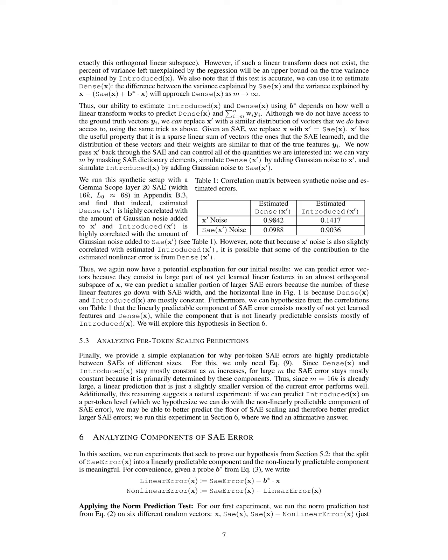Section Summary. In this section, we adopt a weak linear hypothesis to model activations in sparse autoencoders, assuming they learn only the most common linear features while introducing some error. We analyze how well we can predict the norms and vectors of SAE errors, concluding that these errors largely consist of unlearned features and that our ability to estimate them depends on the linear predictability of the introduced and dense components.